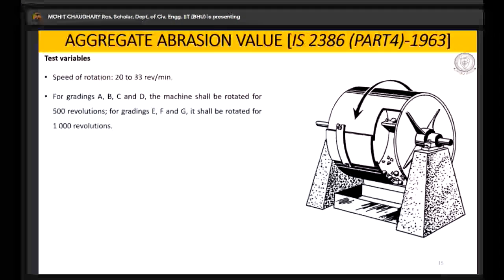The revolutions, the weight, everything is mentioned. For A, B, C, D grading, the machine revolutions are selected as 500, and for E, F and G, it is rotated for 1000 revolutions. We input the material, input the balls, and rotate it at this speed for 15 minutes.